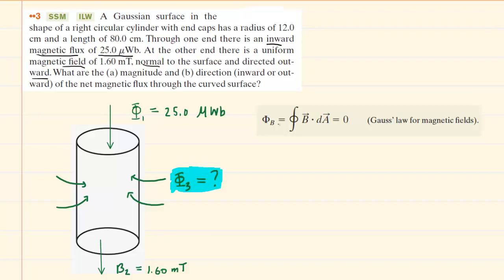Now, to find that unknown, we have to use Gauss's law for magnetic fields, and basically that tells us that the net magnetic flux is equal to zero. So what we'll do is we'll take the three magnetic fluxes, we'll add them together, and set them equal to zero.